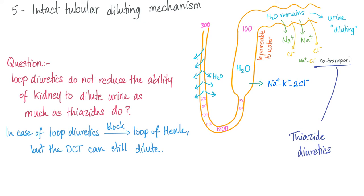Intact tubular diluting mechanism: the loop of Henle reabsorbs sodium through the sodium-potassium-2-chloride transporter, and the DCT reabsorbs sodium through the sodium-chloride co-transporter. We are removing sodium, but this segment is impermeable to water, so water remains inside the tubule, diluting the urine. When you use thiazide diuretics, you eliminate this co-transporter and can no longer dilute urine. Loop diuretics block the loop of Henle, but the DCT still functions and can dilute urine. Thiazides remove the last resort — the last ability to dilute urine.